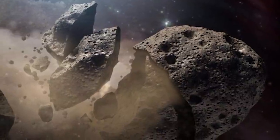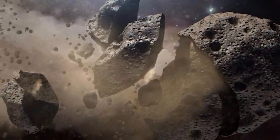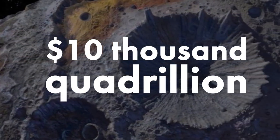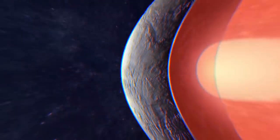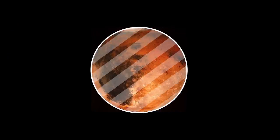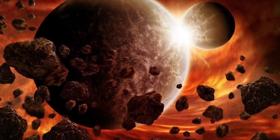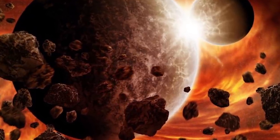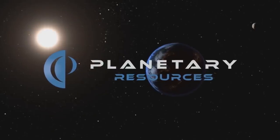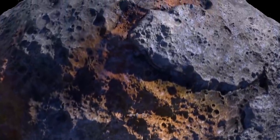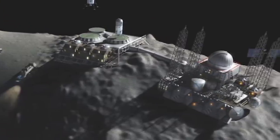This space pebble quietly puttering around the solar system has a value of as much as 10,000 quadrillion dollars. It's likely that billions of years ago, Psyche 16 was the core of an early planet, comparable in size to Mars. But due to frequent collisions with comets, it lost its rocky shell.